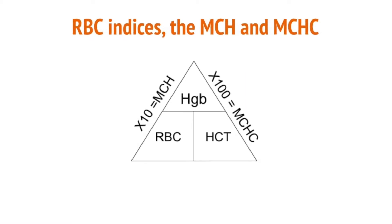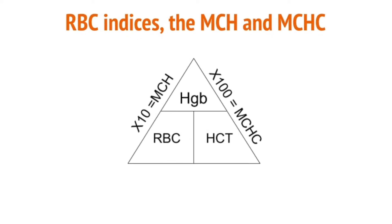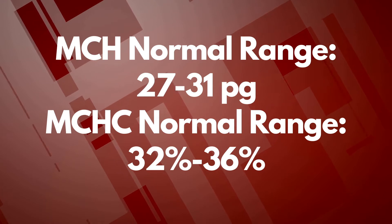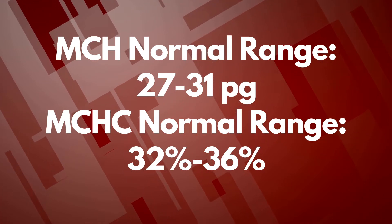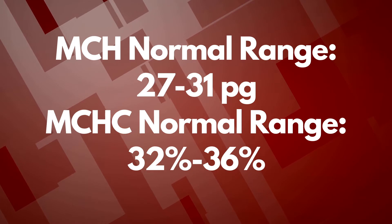Make sure the given values are in their standard units of measurement — sometimes problems use different units, so watch out for that. I used this triangle when I took the ASCP exam and it made the formulas easy to apply. For normal ranges: MCH is between 27 to 31 picograms, and MCHC is between 32 to 36 percent.